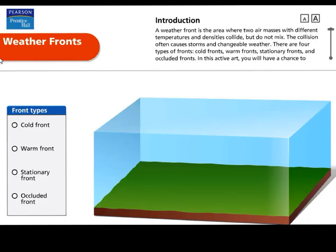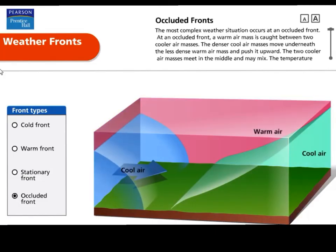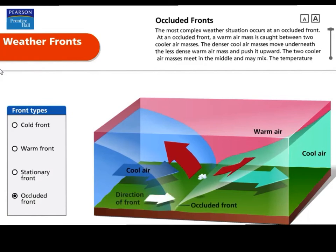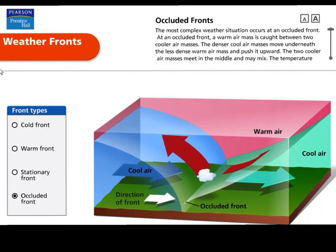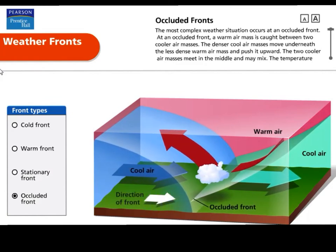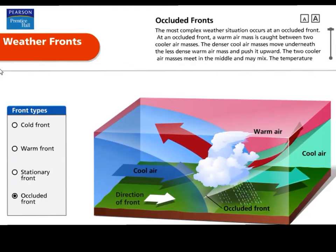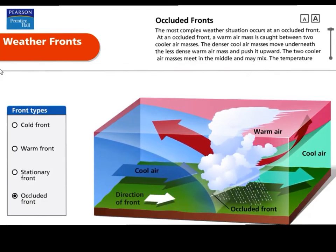The last front is the occluded front. In this animation you're going to see an occluded front. On the left we see a cool air mass coming, and there is also a cool air mass on the right, but above both cool air masses there is a warm air mass. In your workbook, draw a diagram of everything you see here — the more detail you have, the higher your score. Please click pause so you can draw this diagram.